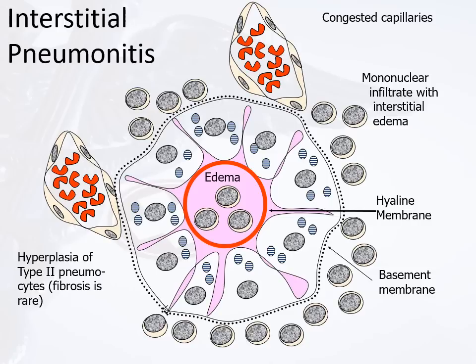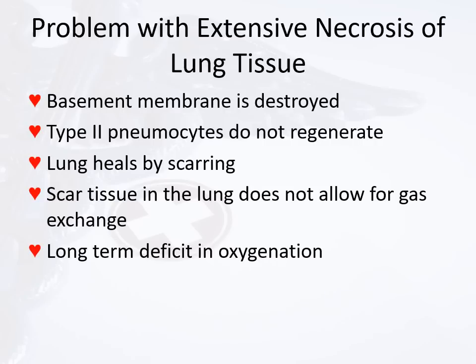The way to heal and regenerate normal lung tissue: type 2 pneumocytes regenerate first, then over time flatten and become type 1 pneumocytes, regenerating normal alveoli. However, if destruction is massive enough to destroy the basement membrane, those type 2 pneumocytes don't know where to grow — leading to fibrosis. The lungs heal by fibrotic scarring, and scar tissue does not allow gas exchange, creating a long-term oxygenation deficit.